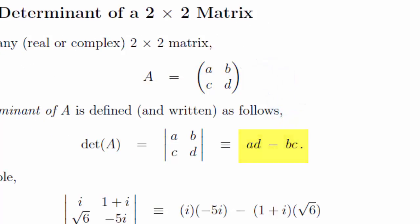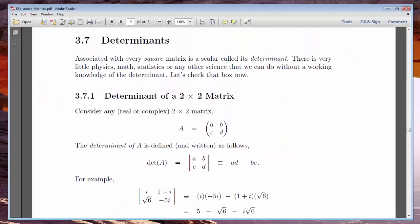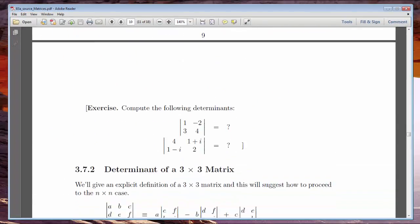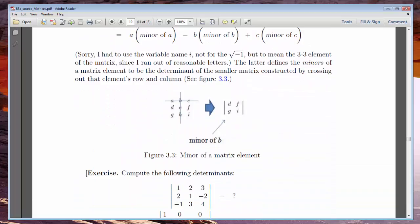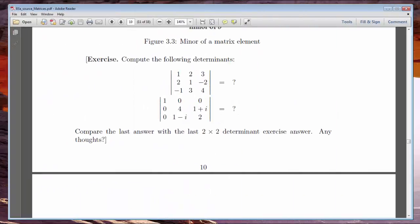The determinant doesn't retain all the information of the original matrix. After all, it's a single number, and the matrix that produces it might have 10 rows and 10 columns, and therefore consist of 100 numbers. But it does tell us something important about the nature of that matrix.